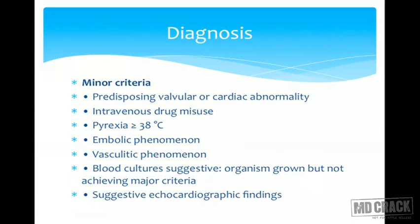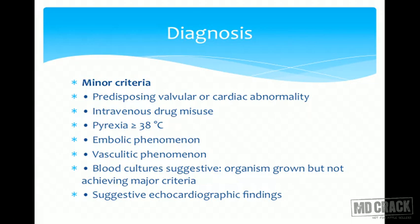Minor criteria include: predisposing valvular or cardiac abnormality; intravenous drug misuse; pyrexia of 38°C or more; embolic phenomena; vasculitic phenomena; blood cultures with suggestive organism growth but not achieving major criteria; and suggestive echocardiographic findings.